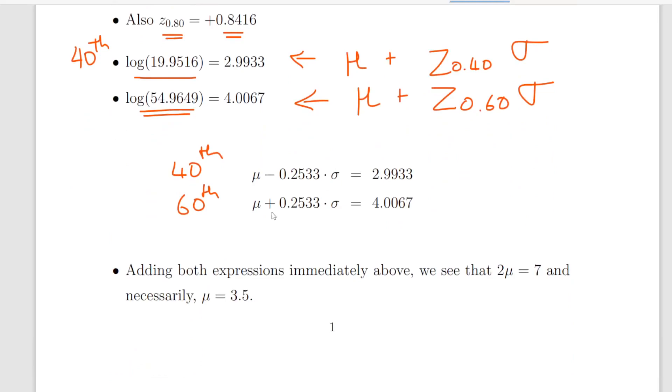So what we're going to do is add them together. And that works out to be 2 mu equals 7, which means mu is necessarily 3.5.